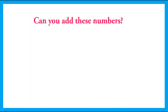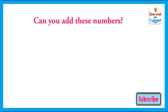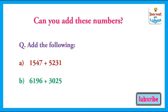Can you add these 4-digit numbers? Here, 2 of the 4-digit numbers are given and you have to add them. Part A: you have to add 1547 and 5231. And in Part B, you have to add 6196 and 3025. So, good luck and thank you.